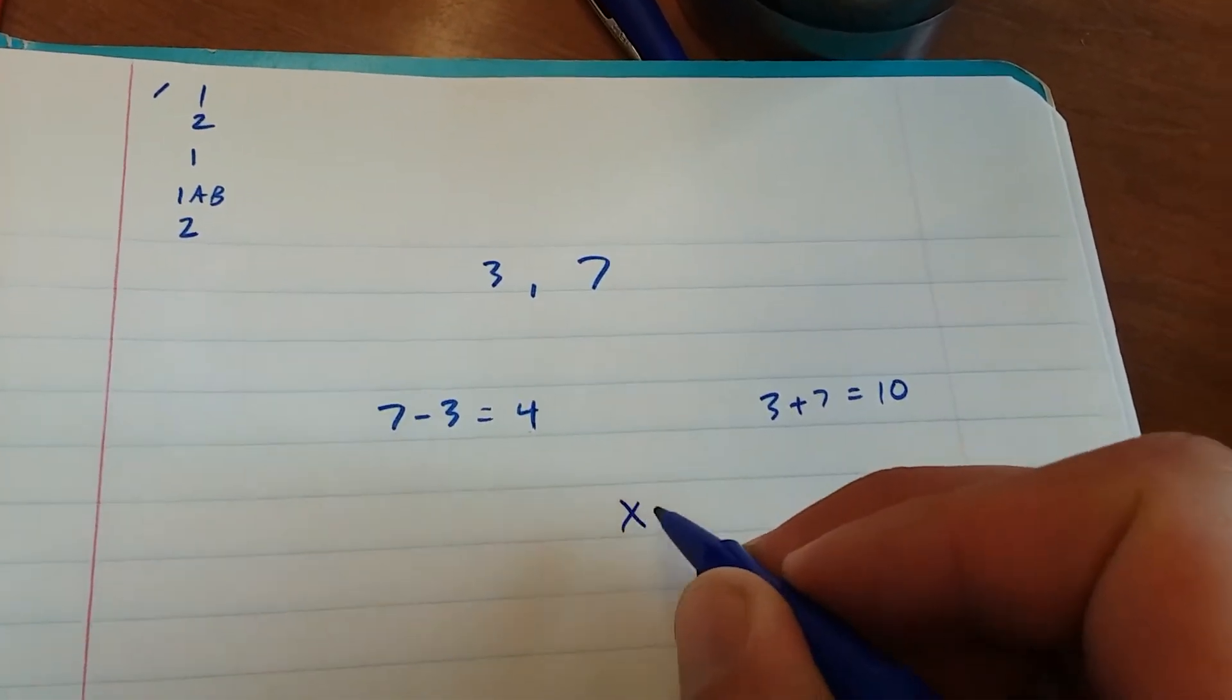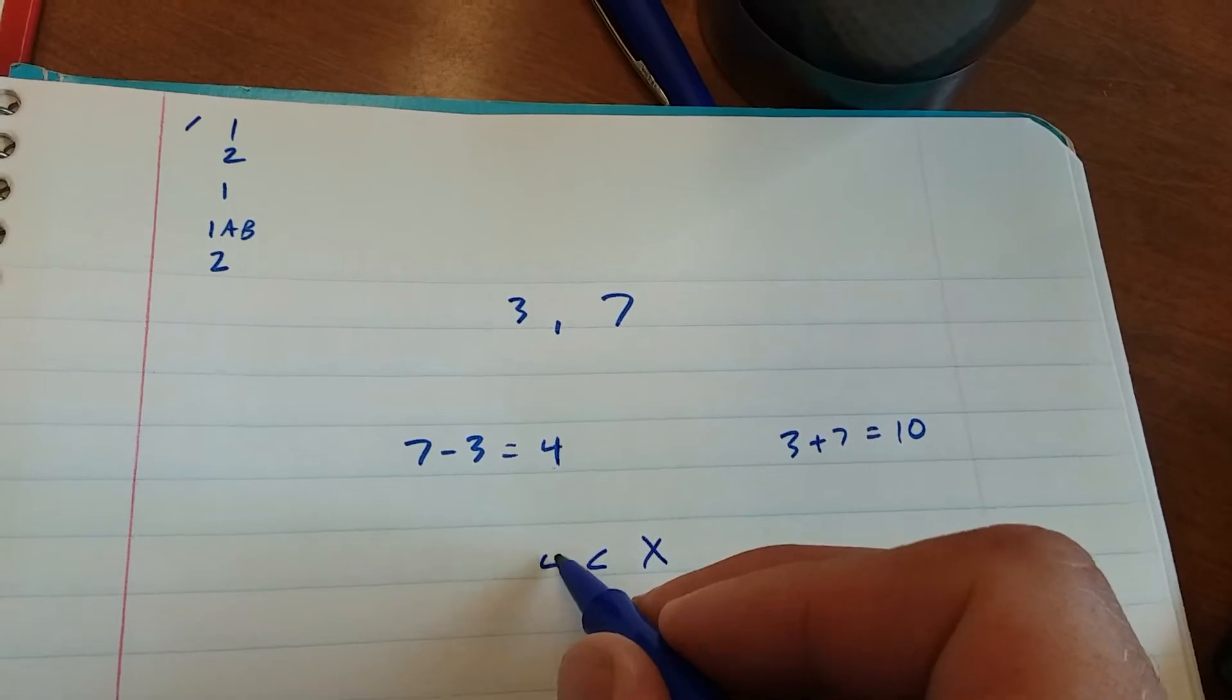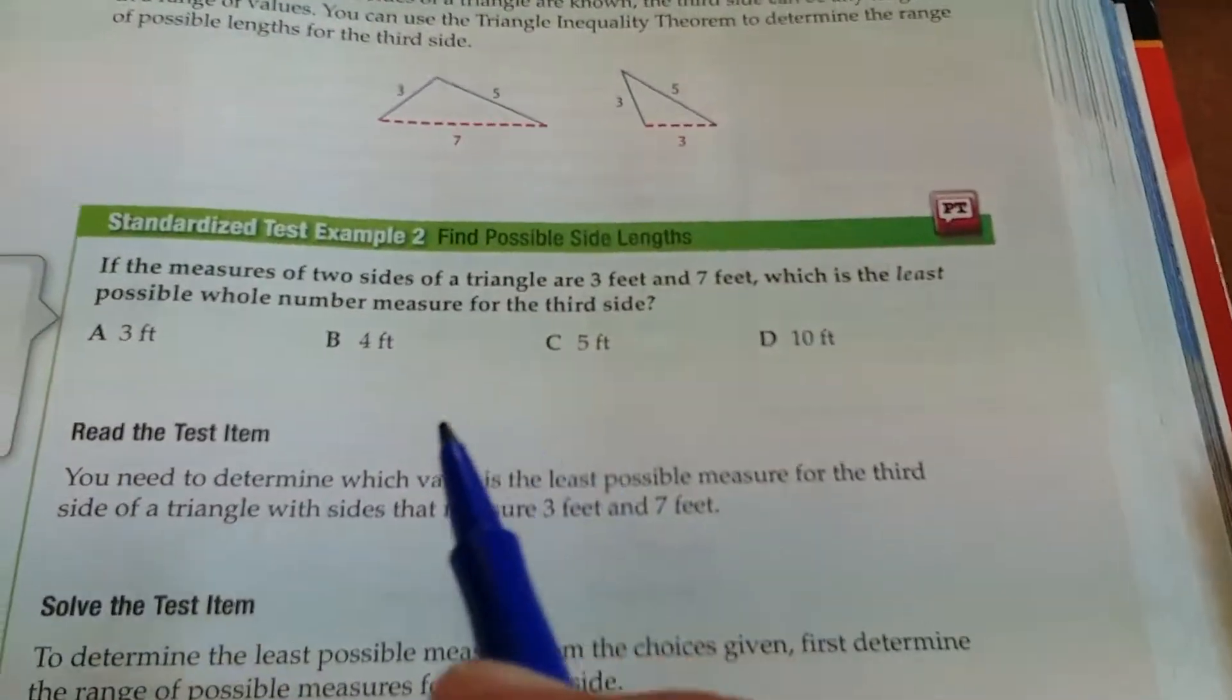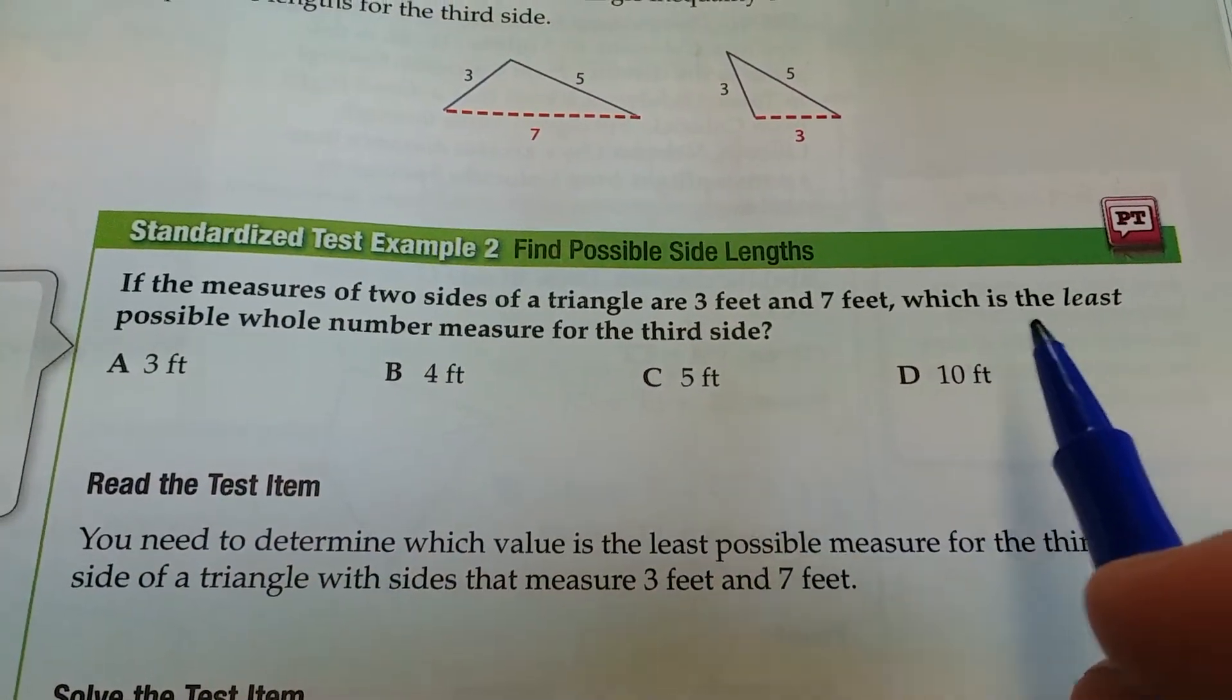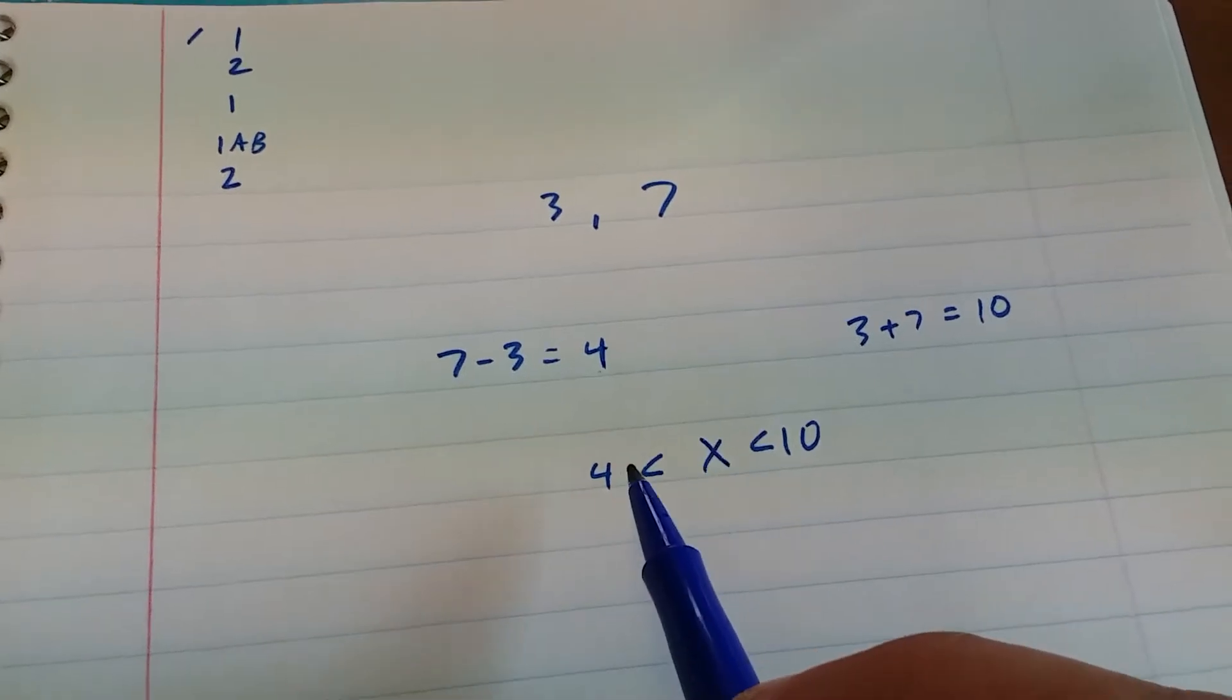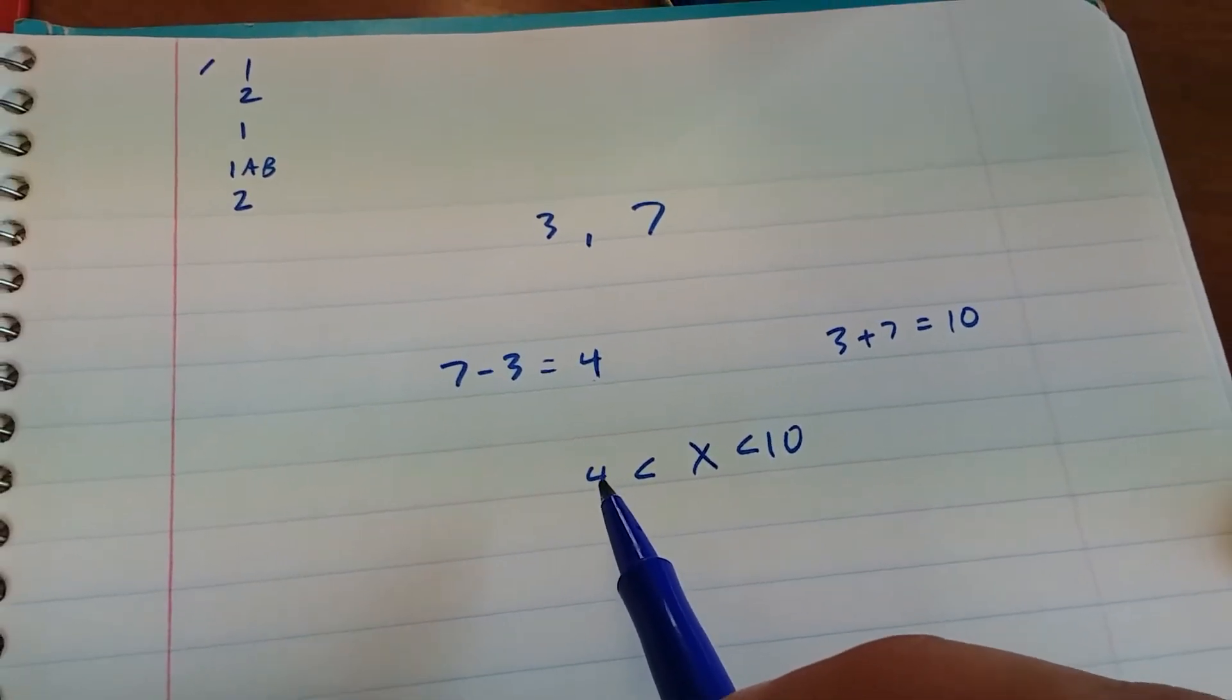So the length x of your triangle must be greater than four but less than ten. Okay, so if we're looking at this question, which is the least possible whole number measure for the third side? It says that x has to be greater than four, so four is not an answer.